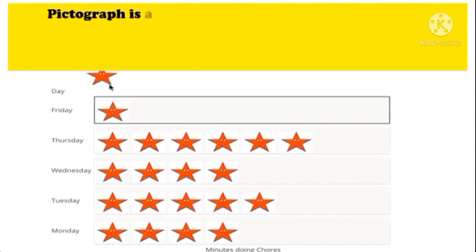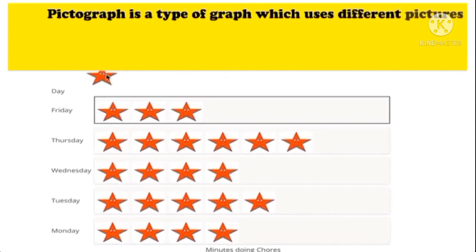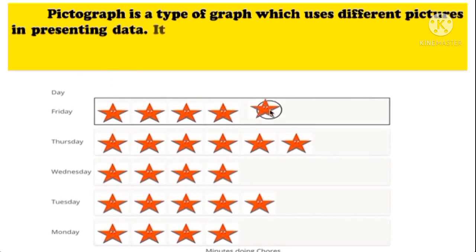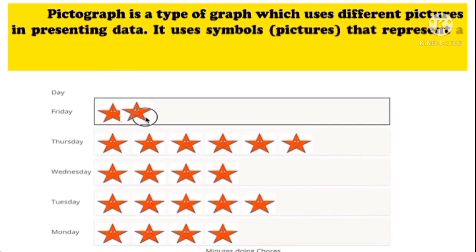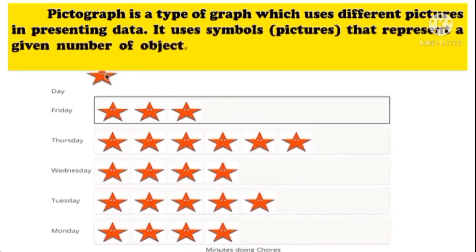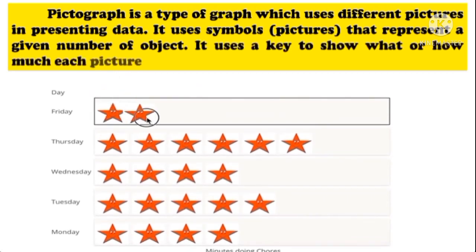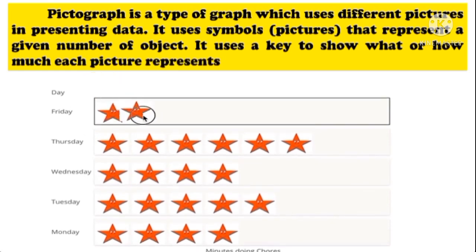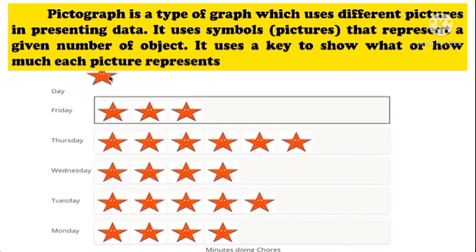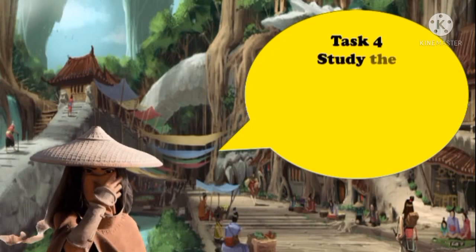So what is a pictograph? A pictograph is a type of graph which uses different pictures in presenting data. It uses symbols or pictures that represent a given number of objects. It uses a key to show what or how much each picture represents. We will now proceed to Task 4.